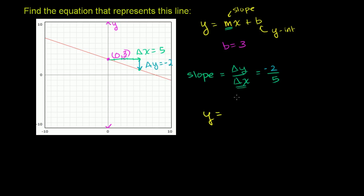It is y equals negative 2 fifths times x, that's m right there, plus b. b is 3, plus 3. And we are done.